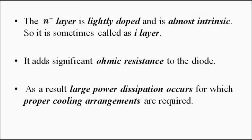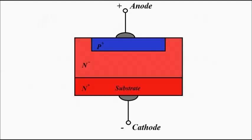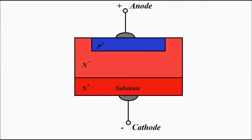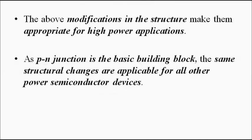This ohmic resistance helps in high power applications because a large amount of I²R power dissipation occurs, and a large amount of heat is generated, for which proper cooling arrangements are required. So the power diode consists of a heavily doped N+ substrate, on which a lightly doped N- layer is formed, then a heavily doped P+ layer, and then the anode and cathode terminals are taken out. The N- layer is the extra structural feature compared to a normal signal diode.